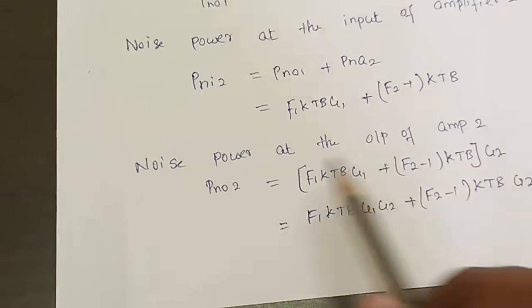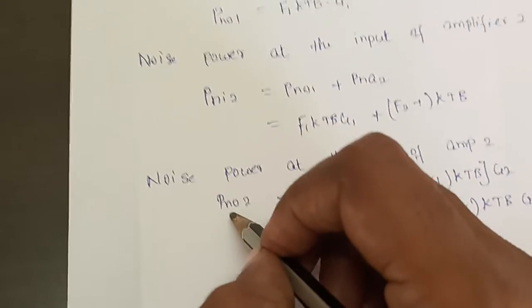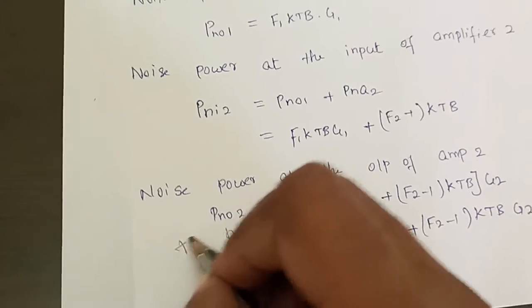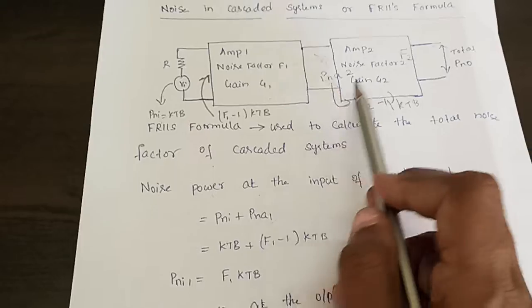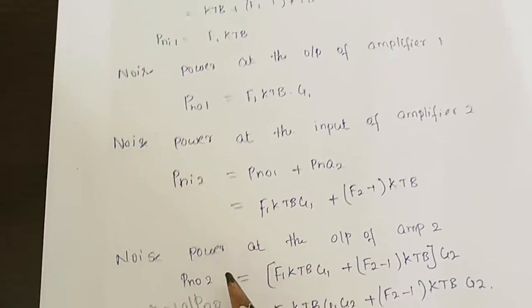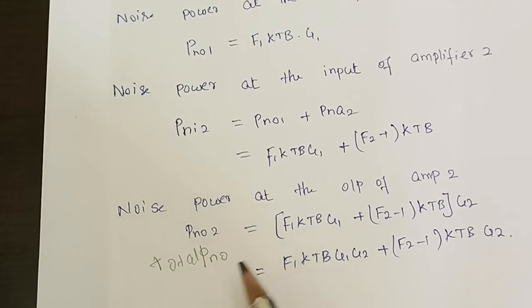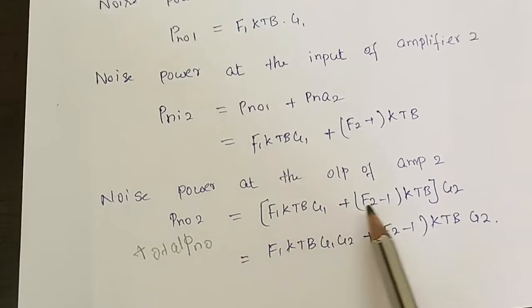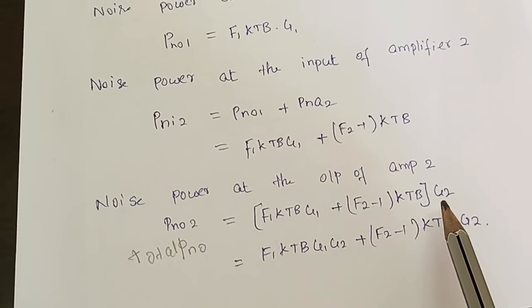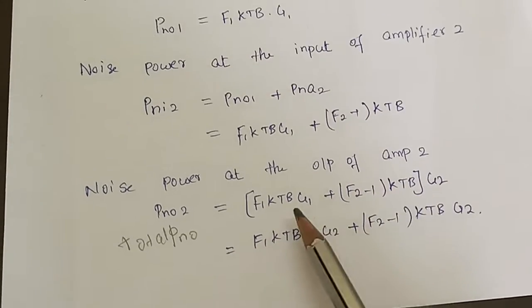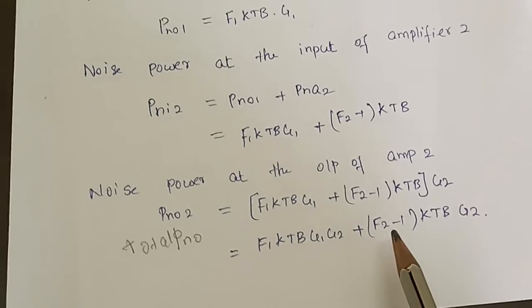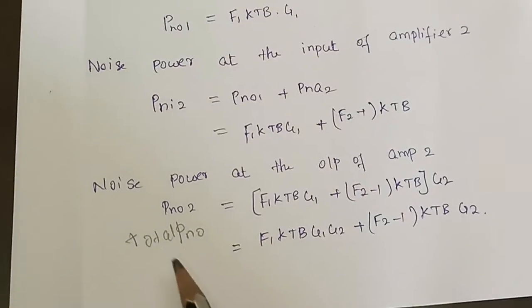The noise power at the output of Amplifier 2, Pno2, also represents the total noise power since it is the cumulative noise power at the output of both amplifiers connected in cascade. This total Pno is obtained by multiplying the input to Amplifier 2 by gain G2, giving: F1·KTB·G1·G2 + (F2 - 1)·KTB·G2.